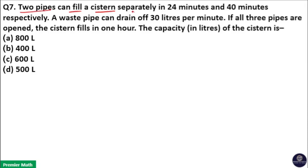Two pipes can fill a cistern separately in 24 minutes and 40 minutes respectively. A waste pipe can drain off 30 liters per minute. If all three pipes are open, the cistern fills in one hour. The capacity in liters of the cistern is: